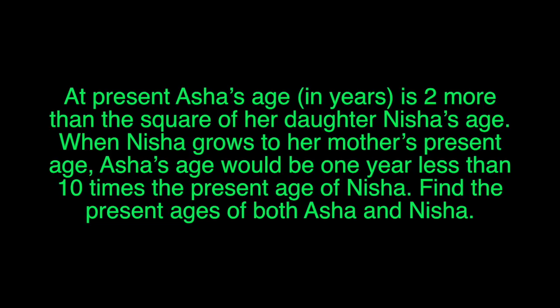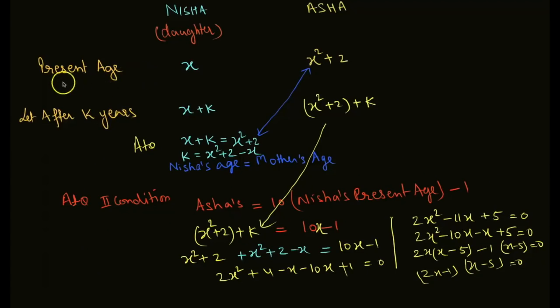At present, Asha's age is 2 more than the square of her daughter Nisha's age. When Nisha grows to her mother's present age, Asha's age would be 1 year less than 10 times the present age of Nisha. Find the present ages of both Asha and Nisha.